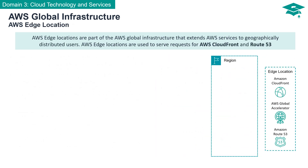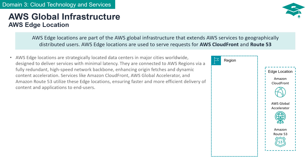AWS edge locations are part of the AWS global infrastructure that extends AWS services to geographically distributed users. They are strategically situated in major cities around the globe, meticulously designed to provide AWS services with minimal latency. These locations serve as critical touch points for services like Amazon CloudFront, AWS Global Accelerator, and Amazon Route 53.